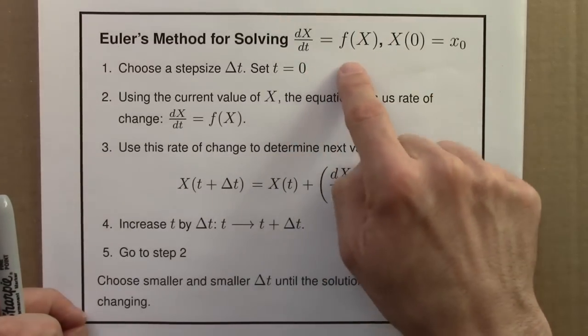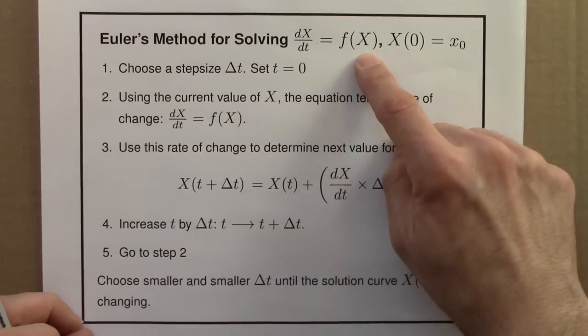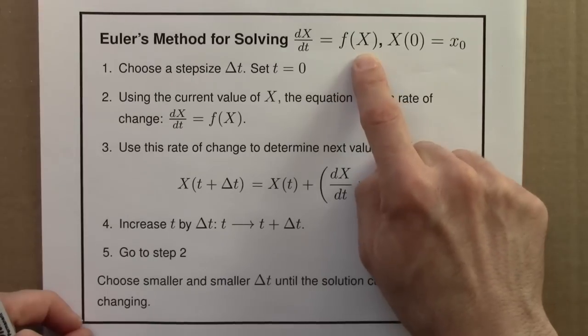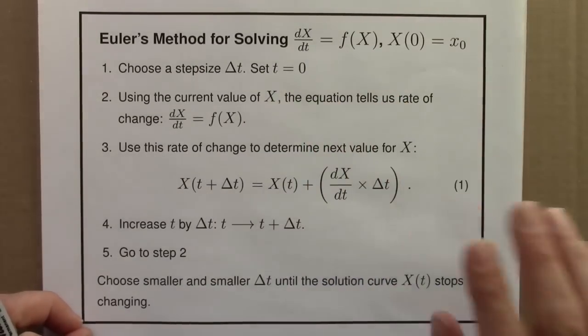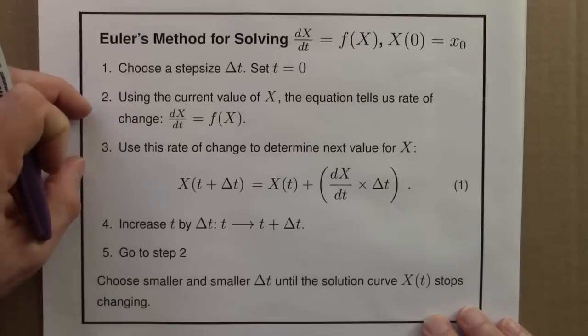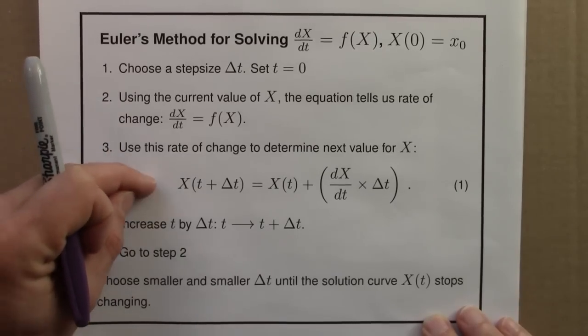So again, we're thinking of this as a dynamical system. It's a rule that specifies how x changes. The rule is written in terms of the derivative, the rate of change of x, rather than x directly, but not a problem. Euler's method or things like it let us convert from rates of change into the function itself.